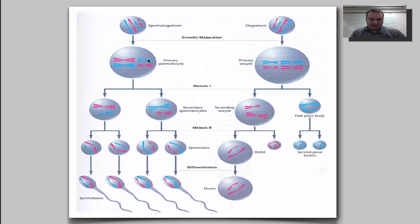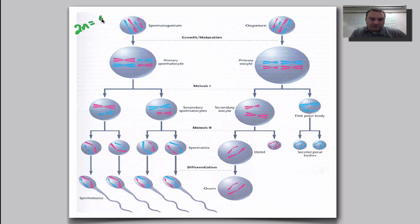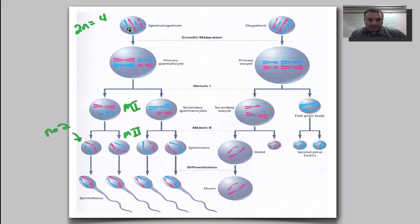On the spermatogenesis side, you start with your mother cell called a spermatogonium. It goes through DNA replication. Using a simplified example where 2n equals 4, we go through DNA replication and some crossing over, then meiosis one, then meiosis two. The resulting cells have n equals 2. You always get one maternal and one paternal chromosome in each, and eventually they develop into sperm cells with little tails — flagella.